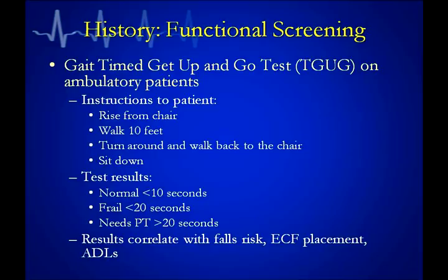The gait assessment — the timed Get-Up-and-Go test — is something we don't normally do in the emergency room, but it can be used for ambulatory patients in the ED. The test is simple: the patient is sitting in a chair, you ask them to rise, walk 10 feet, turn around, walk back, and sit. Normal time should be less than 10 seconds. If it takes 10 to 20 seconds, we consider these patients to have some frailty. If it's more than 20 seconds, these patients actually need subacute rehab or they will decline further.